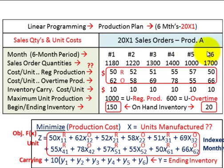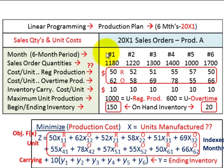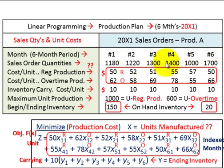I've got a table set up here. The first row across the top represents each of the monthly periods that we're going to be looking at — month one through month six. Under each of those months we're going to have our different quantities to deal with. For month one we have sale order quantities — the quantity of units we're going to have to produce — 1,180. Then each of the successive months two through six, those are confirmed sales orders we're going to have to produce over that time period.